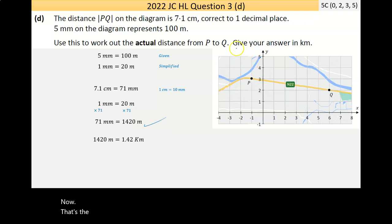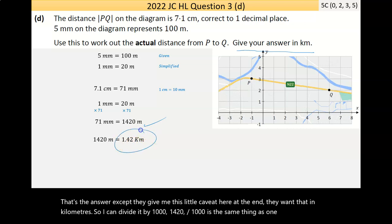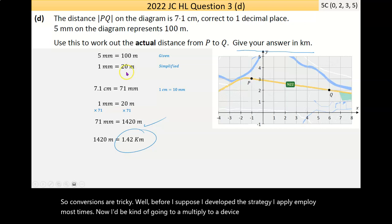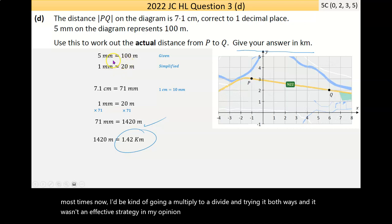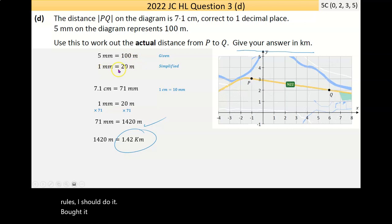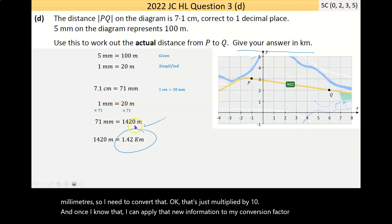They want that in kilometers. I can divide by 1000. 1420 divided by 1000 is 1.42 kilometers. Conversions are tricky. What I always do now is write the statement out and apply the algebra rules. I divide by five to get one millimeter. Then I get a much more useful statement and apply that to my conversion factor.